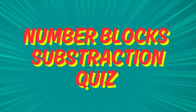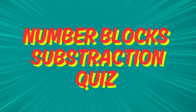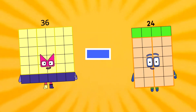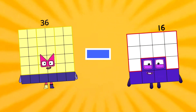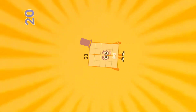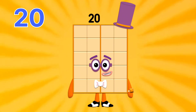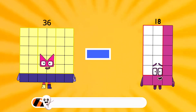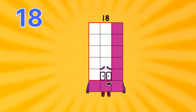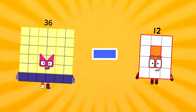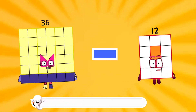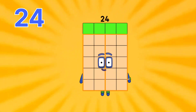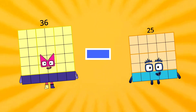Number block subtraction quiz. Let's start. 36 minus 24 equals 12. 36 minus 16 equals 20. 36 minus 18 equals 18. 36 minus 12 equals 24. 36 minus 25 equals 11.